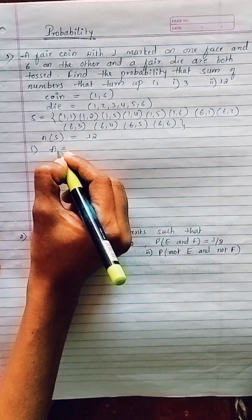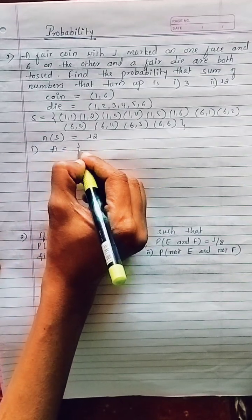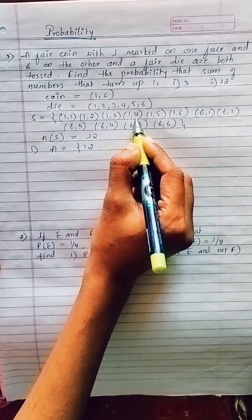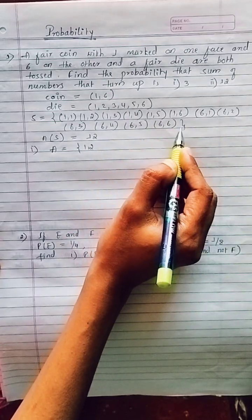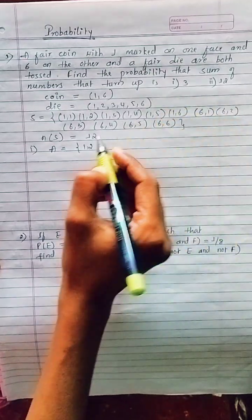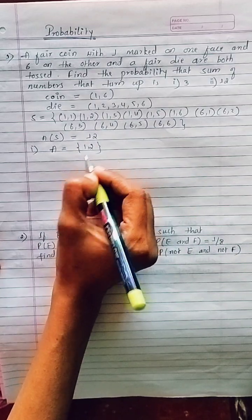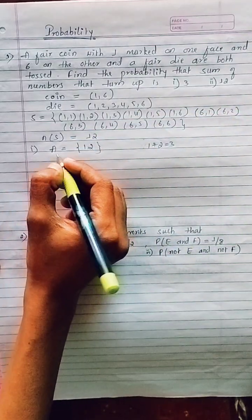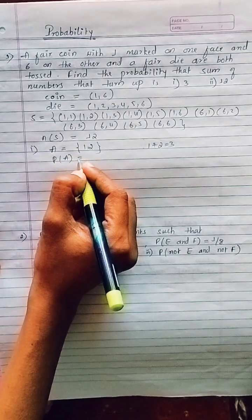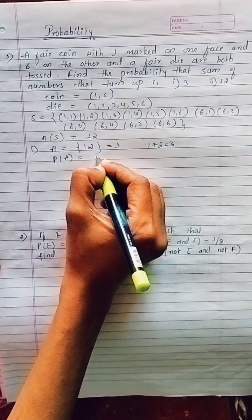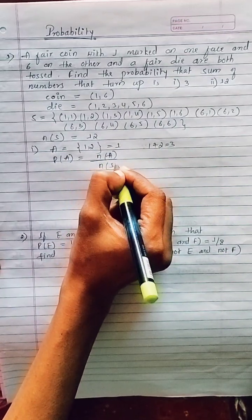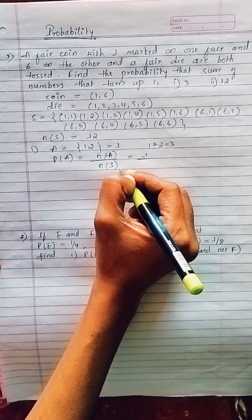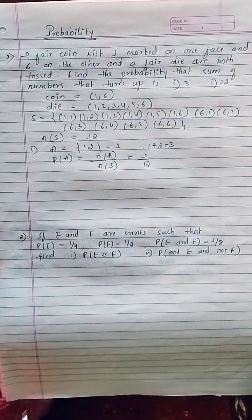Let event A be the set of outcomes where the sum equals 3. Only one pair, (1,2), gives 1+2=3. The remaining pairs give sums of 4, 5, 6, 7, and higher. So the number of favorable outcomes is 1. Therefore, probability of event A = favorable outcomes / total outcomes = 1/12.